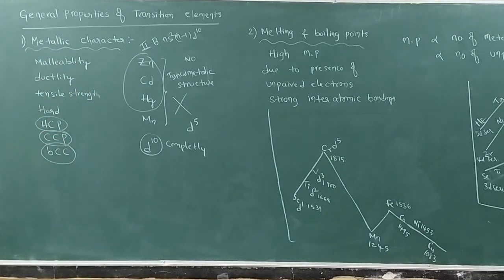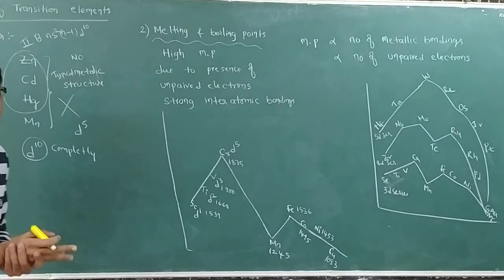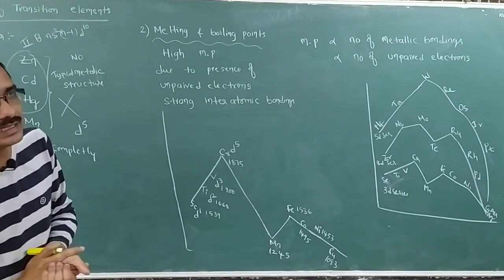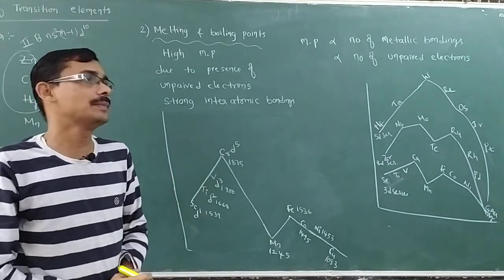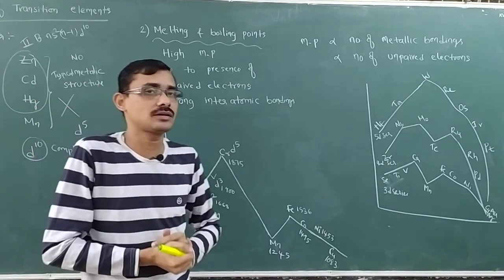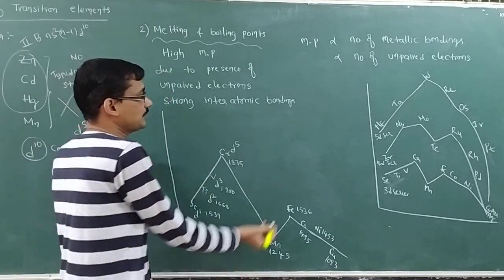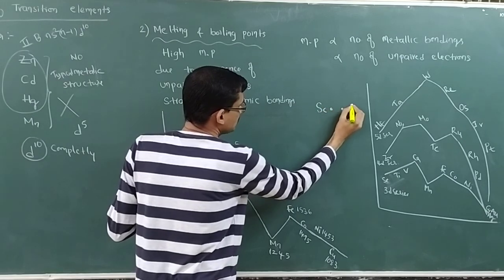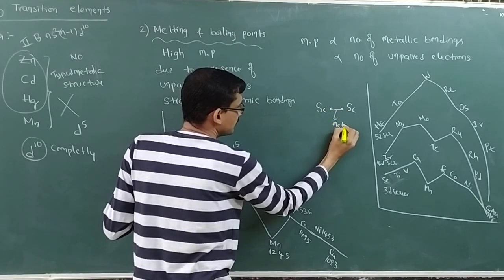Now, we will see the melting and boiling points. Being metals, they are hard in nature and have high melting points. Melting point depends on unpaired electrons — more unpaired electrons means more metallic bonds, and therefore higher melting points. Unpaired electrons generally form metallic bonds. For example, scandium has D1, one unpaired electron, and forms one metallic bond.